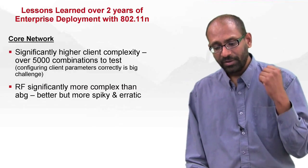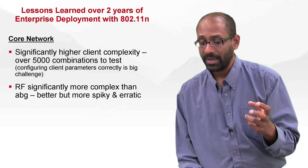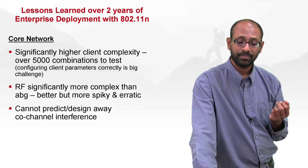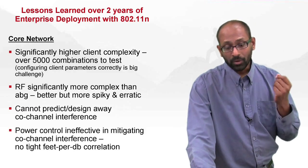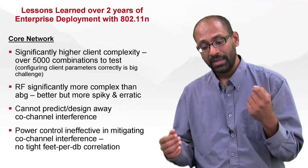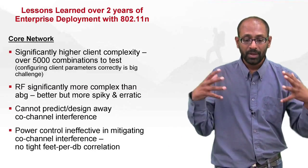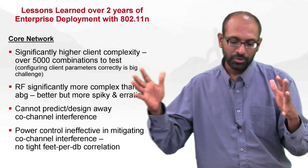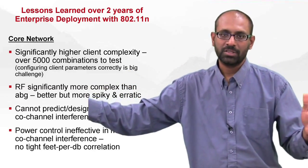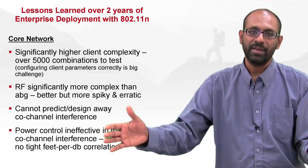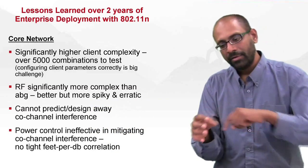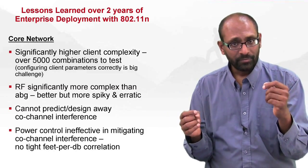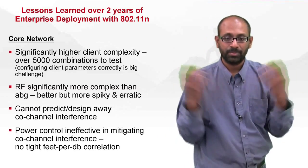Second, RF is significantly more complex than ABG — it's better, but much more spiky and erratic, which means you cannot predict or design a WACO channel interference. Power control is less effective in mitigating co-channel interference because with MIMO there is no tight correlation in terms of feet per dB. Reducing power and reducing coverage are correlated, but not tightly correlated — very difficult to predict, because it's spiky and erratic.